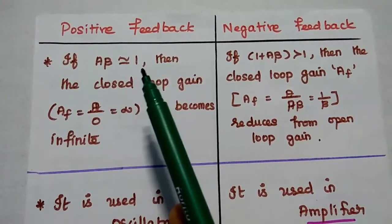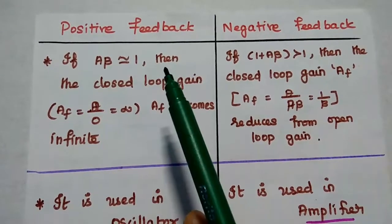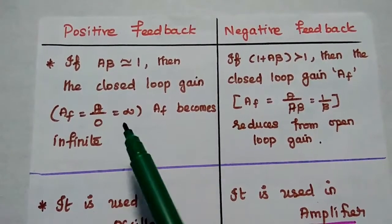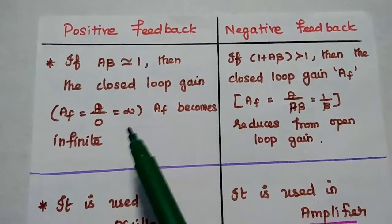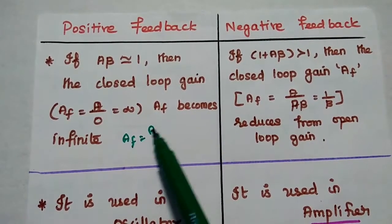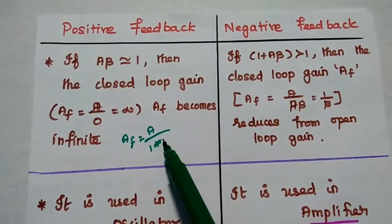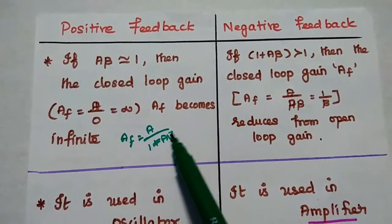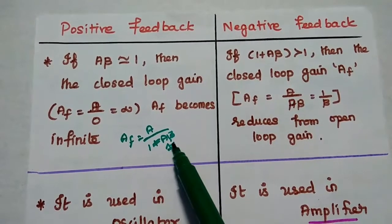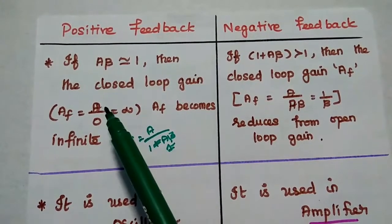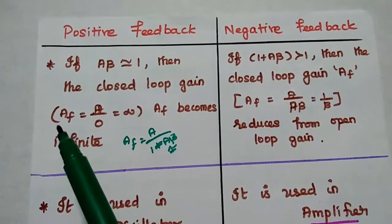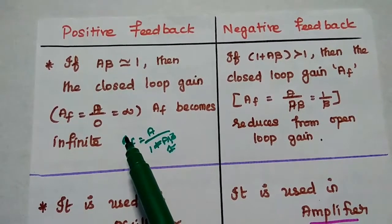In positive feedback, if A·beta approaches unity, then the closed-loop gain A_F becomes infinite. We know that A_F equals A divided by 1 minus A·beta. So A·beta approaching unity means 1 minus 1 equals 0, and anything divided by 0 is infinite. Hence the gain is infinite, and it is called regenerative feedback.